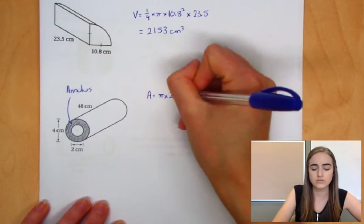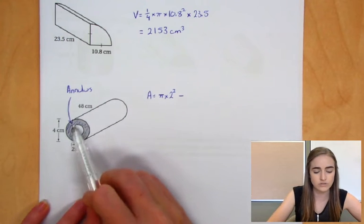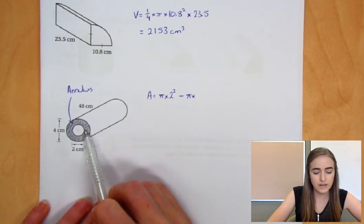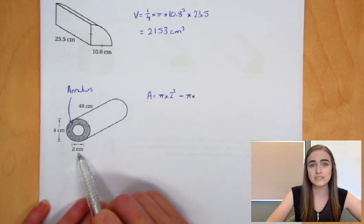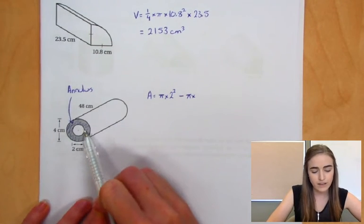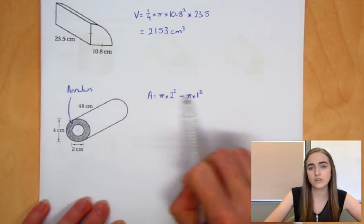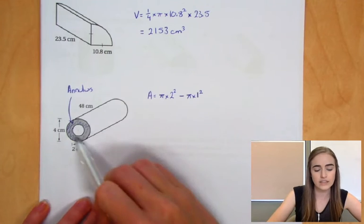So that's the big circle. Then we're going to minus this little circle here, which would be pi times... And because from one side all the way to the other is that 2 centimeters, the radius then, so from the middle out, would just be 1. So we've got the area of the big circle minus the area of the little circle to get that shaded area.